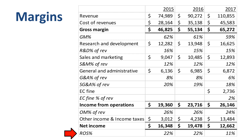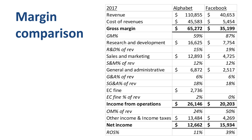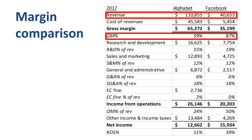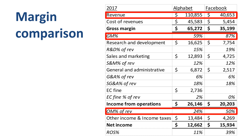How do the margins at Alphabet Inc compare to another well-known technology company, Facebook? Facebook's revenue is $40.7 billion compared to Alphabet Inc's $110.9 billion. On those revenues, Alphabet Inc makes around 60% gross margin and Facebook 87%, as Facebook has much lower cost of revenues — around 27 to 28 percentage points difference in gross margin, which translates to about the same difference in operating margin. Alphabet Inc spends more in R&D in absolute dollar terms; Facebook spends more in relative percentage terms. On SG&A, both companies spend 18%.